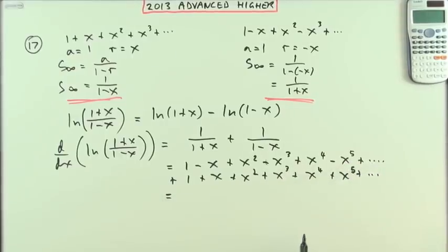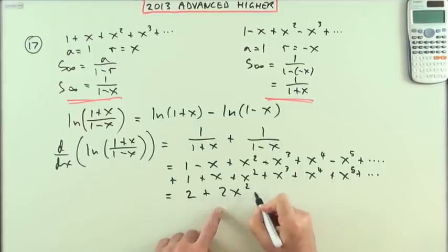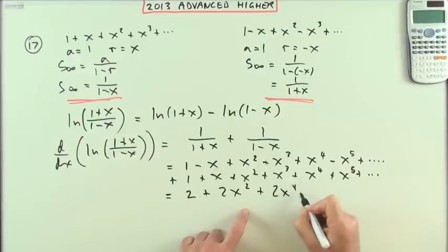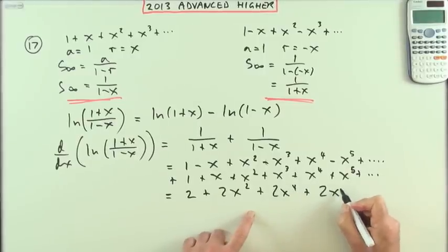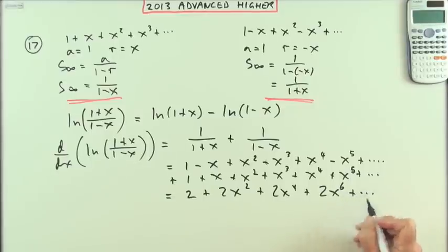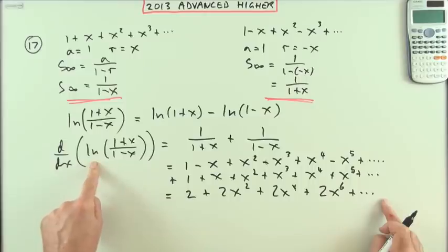Adding them together, you're only left with these even-powered terms. I've got 2 + 2x² + 2x⁴, and it would continue that way—2x⁶ and so on.